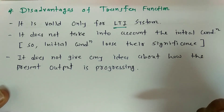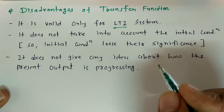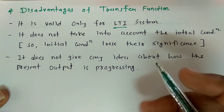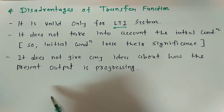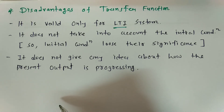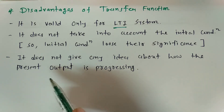If initial conditions are different, it is possible that the output may change with respect to the input. By theoretical calculation you might have an assumed output, but if initial conditions change, the actual output may differ from what you assumed with a fixed input. Transfer function does not give any idea about how the present output is progressing, and it does not predict future signals — it only gives the theoretical output with respect to input under fixed conditions.